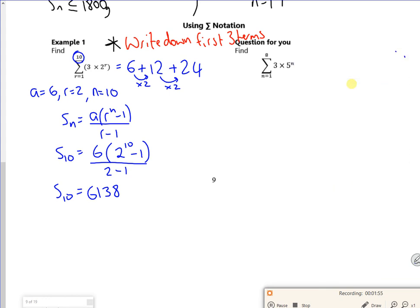If I put n in as 1, I get 3 times 5 is 15. If I put n in as 2, I get 3 times 5 squared, so that's 75. If I put n in as 3, I get 3 times 125, which is 375. Hopefully you can see I'm multiplying by 5 every time.